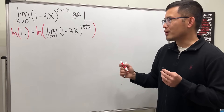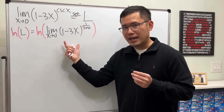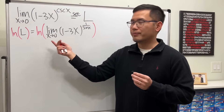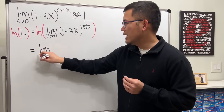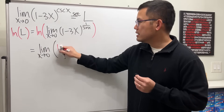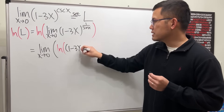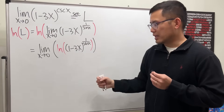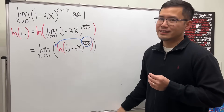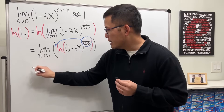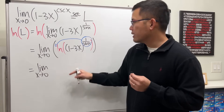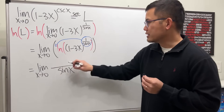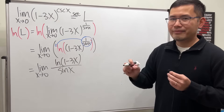The beauty of this is that ln is a continuous function, so we can move it inside the limit. This gives us the limit as x approaching 0 of ln of (1 minus 3x) raised to the 1/sin(x) power. Using the log power rule, we bring the power to the front, eliminating the power-to-a-power case, and we end up with the limit as x approaching 0 of ln(1 minus 3x) over sine x.